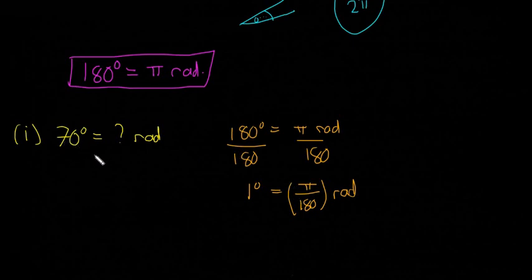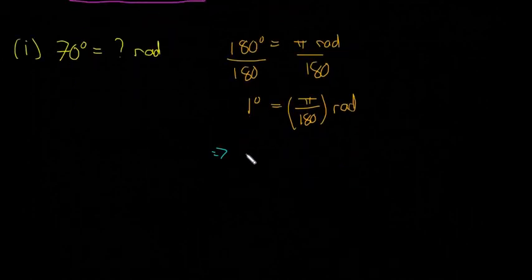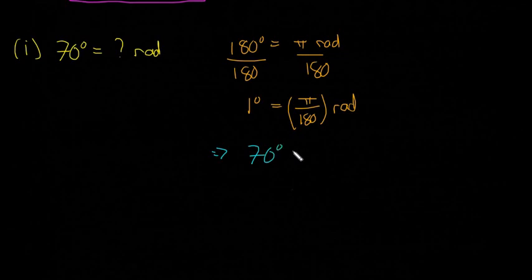If we want to find out what 70 degrees is, if one degree is this then 70 degrees, I'll do a different color, this implies that 70 degrees is just going to be 70 times this. Multiply both sides by 70 and now we have 70π/180. If you want to simplify that a little bit more, it's just 7π/18 radians.